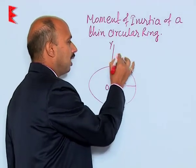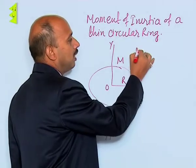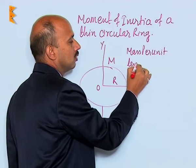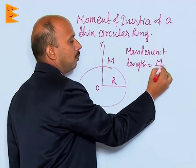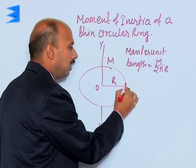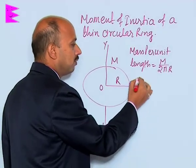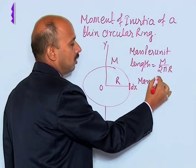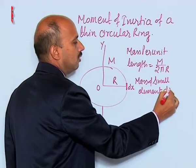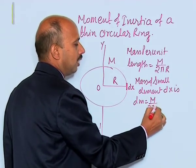Suppose the mass of the ring is m and the circumference is 2πr. So first we calculate mass per unit length, which is m / 2πr — that is also called linear mass density. We assume a small element of length dx, so the mass of that small element is dm = (m / 2πr) · dx.